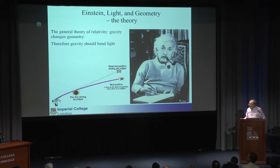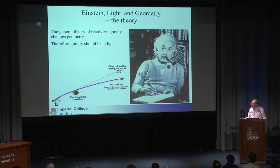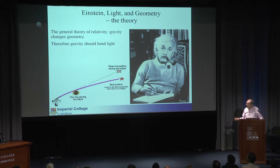Eddington made observations — one was foiled by cloud, but the other yielded a result showing you can only see the deflection of starlight when the sun is eclipsed, because otherwise the glare is too great to see the star. During an eclipse, you can observe the star, which appears to be in the wrong position in the sky because the trajectory of the light is bent.